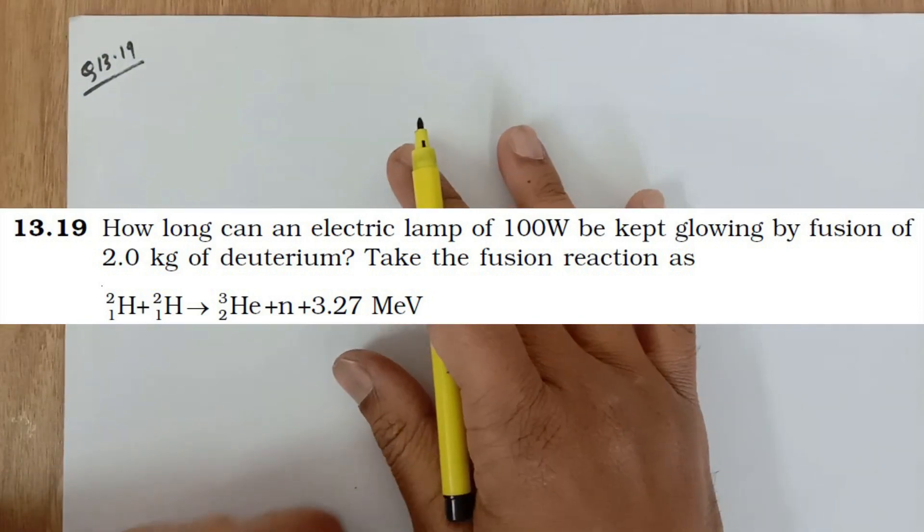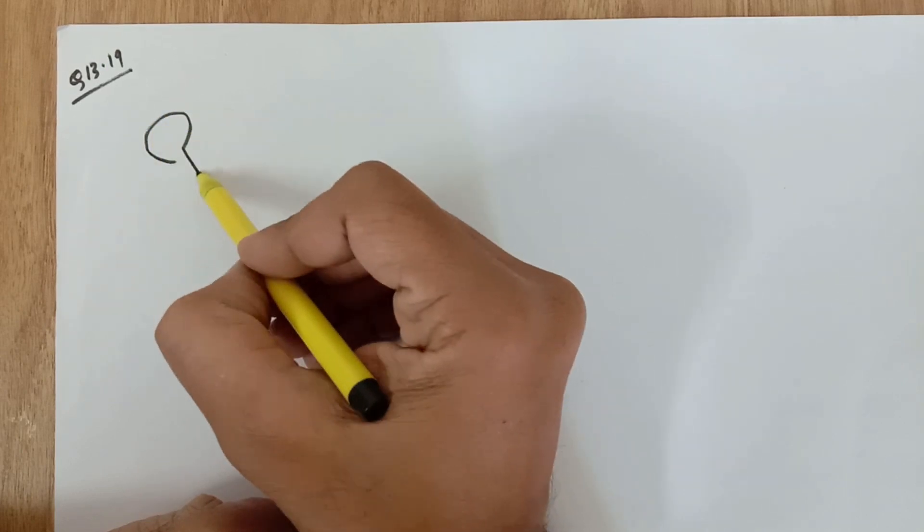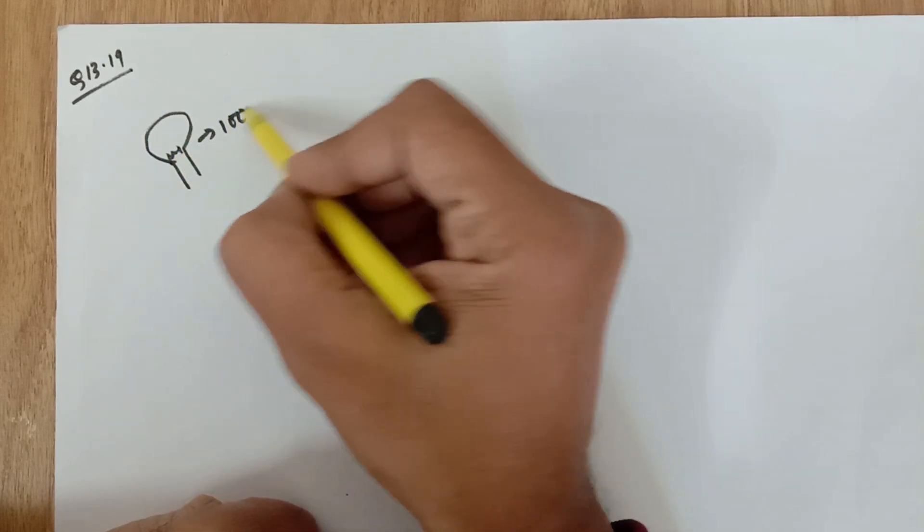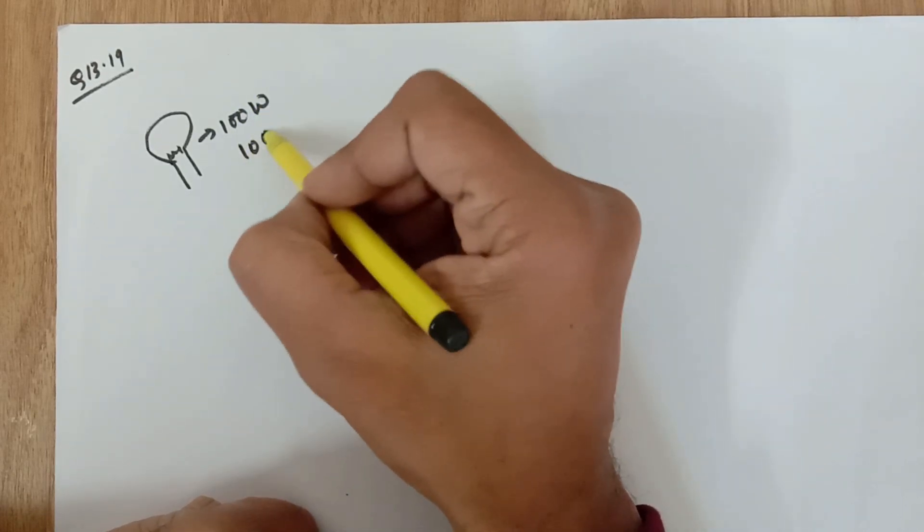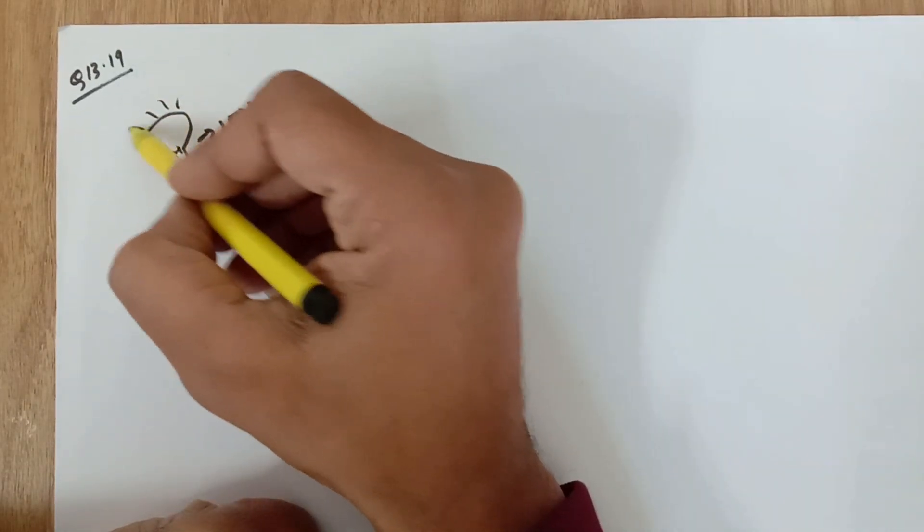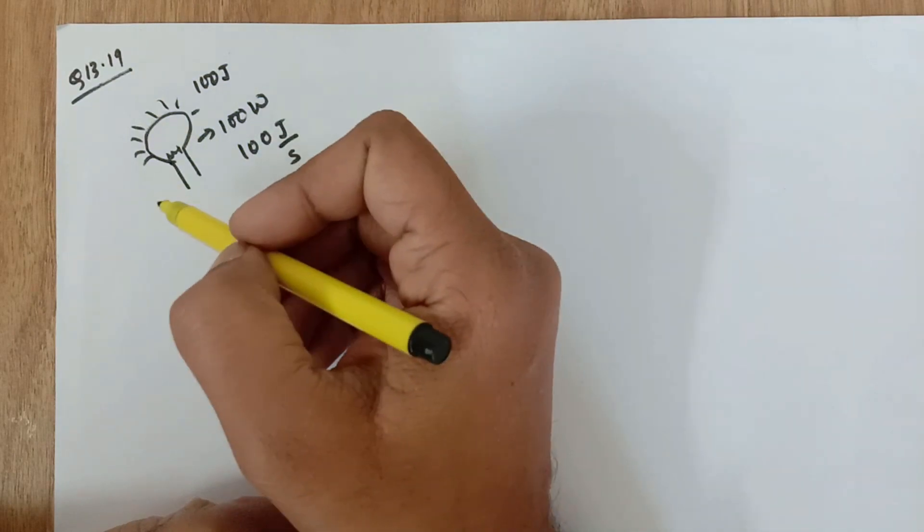In this problem we are given a 100-watt bulb. First of all, you need to understand that a 100-watt bulb means 100 joules per second, which means in one second it throws 100 joules of light energy into the surroundings.